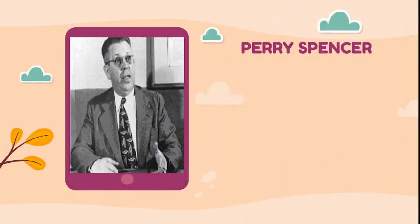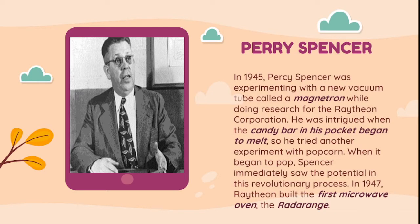Moreover, the first microwave oven was invented by Percy Spencer. In 1945, Percy Spencer was experimenting with a new vacuum tube called a magnetron while doing research for the Raytheon Corporation. He was intrigued when the candy bar in his pocket began to melt, so he tried another experiment with popcorn. When it began to pop, Spencer immediately saw the potential in this revolutionary process. In 1947, Raytheon built the first microwave oven, the Radar Range.